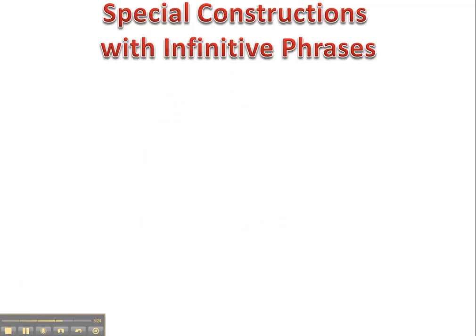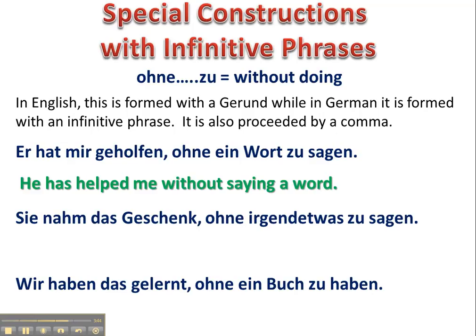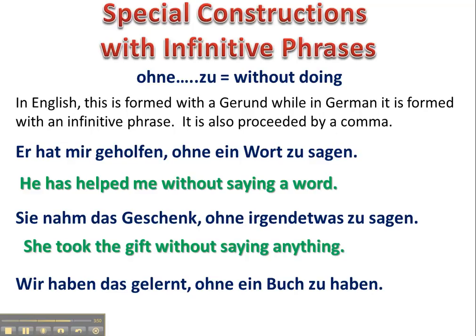Another construction is 'ohne zu.' In English we accomplish this by the use of a gerund, but in German they do this with an infinitive phrase. For example, 'er hat mir geholfen, ohne ein Wort zu sagen' — in English we'd say 'he has helped me without saying a word.' It's almost like in German you have to think of it as 'he has helped me without a word to say.' 'Sie nahm das Geschenk ohne irgendetwas zu sagen.' 'Wir haben das gelernt ohne ein Buch zu haben.'